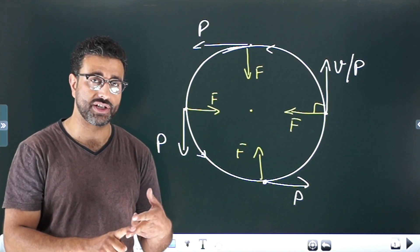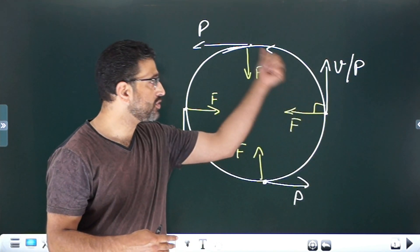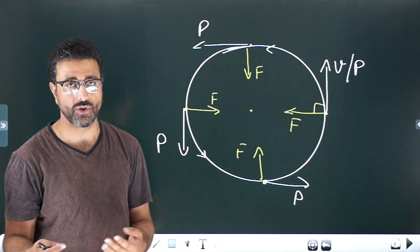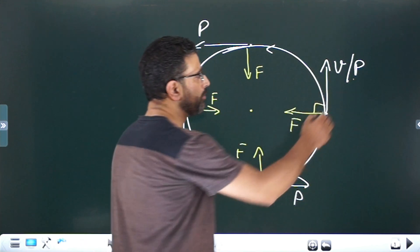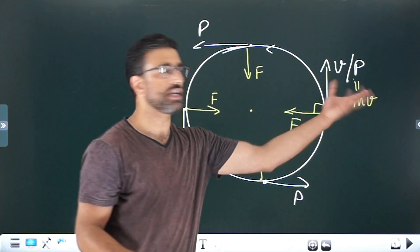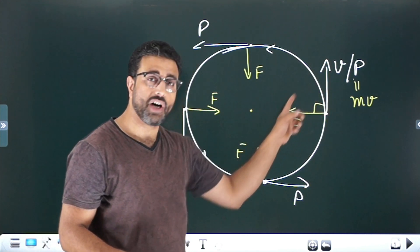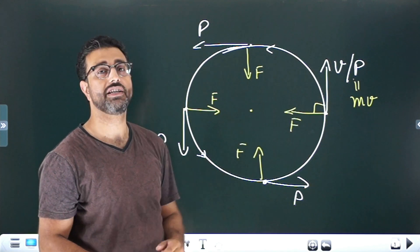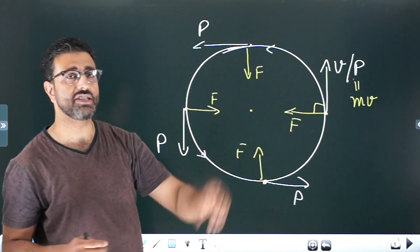The magnitude of momentum does not change — only the direction changes. That's exactly what happens in uniform circular motion: only direction changes, speed does not change. Momentum's magnitude is mv, so if v doesn't change, the magnitude of momentum also doesn't change. When force is perpendicular to momentum or velocity, only direction changes.